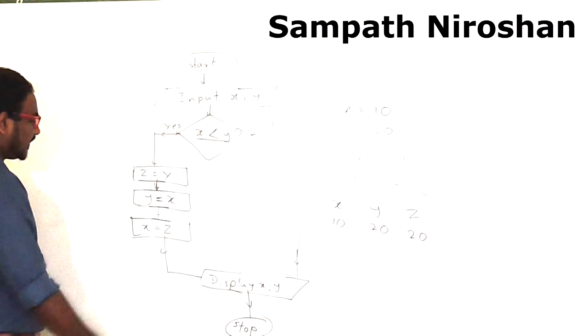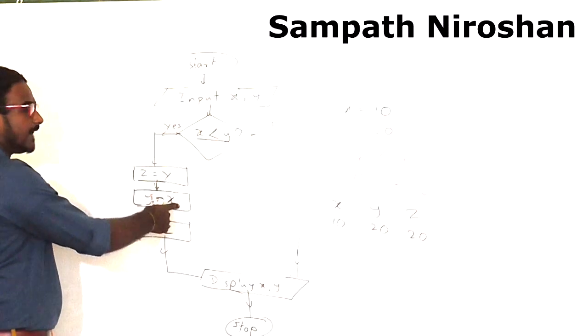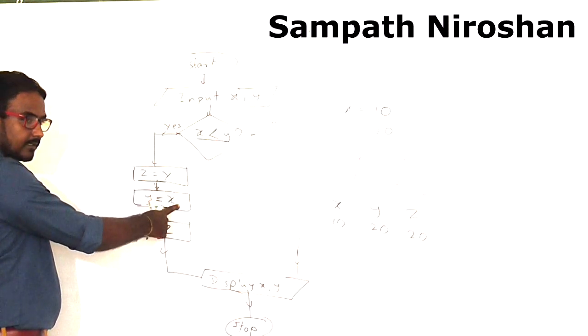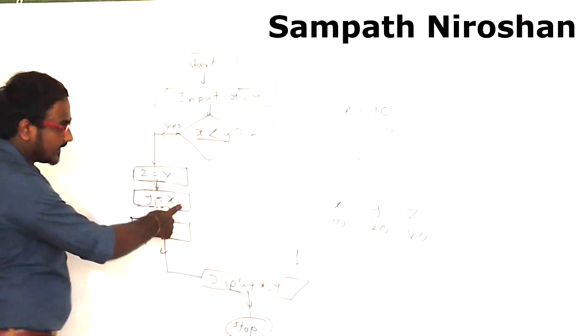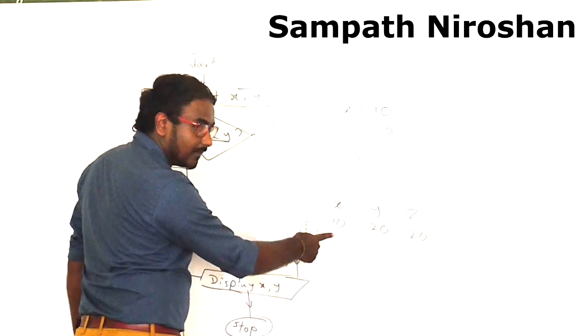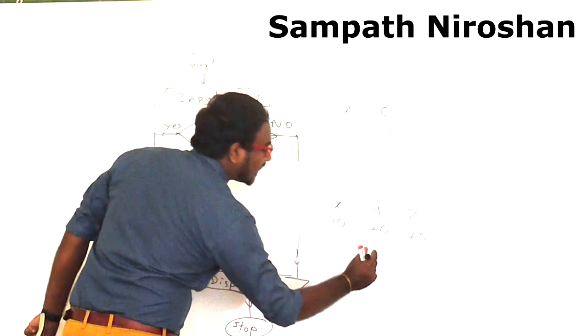In the next step, y gets the value of x. During the second step, y gets the value of x. X is 10 at the moment, it is given to y, so the current y will turn to 10.